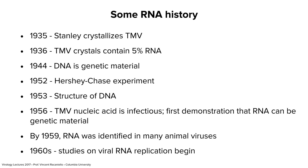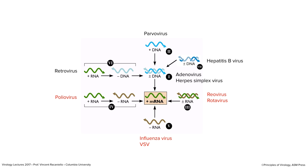The way that was demonstrated is they extracted pure RNA from the particle, transfected it into plant cells, and out came new virus particles. So that RNA was infectious — it was obviously the genetic material. By 1959, RNA was found in many animal viruses, and that began studies on how this molecule could replicate, because our genetic material and everything else we knew on the planet is DNA. We've made a lot of progress since the 1960s.